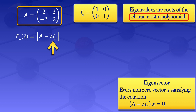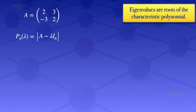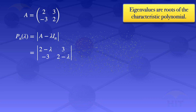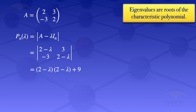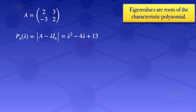Multiplying I_n by lambda gives us lambda on the diagonal, so we subtract lambda from the diagonal elements of matrix A. This results in the determinant of the matrix: (2−λ), 3, −3, (2−λ). Using the 2×2 determinant formula AD minus BC, this simplifies to (2−λ)(2−λ) plus 9, which expands to give us the characteristic polynomial: λ² − 4λ + 13.